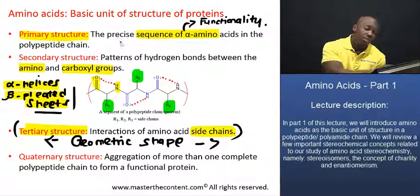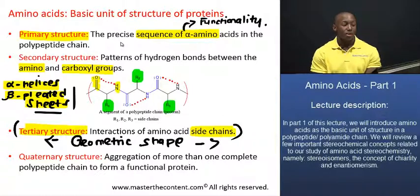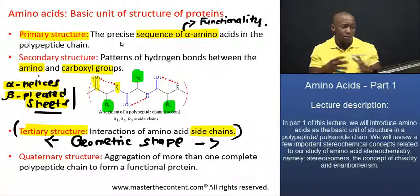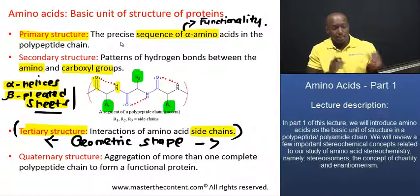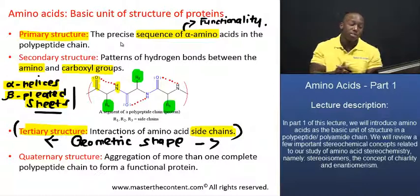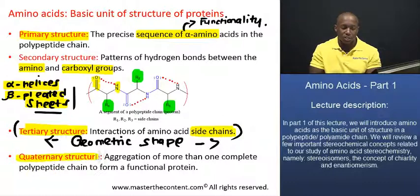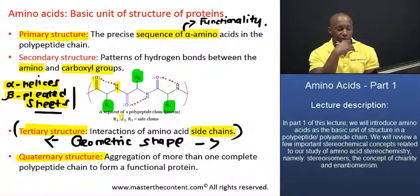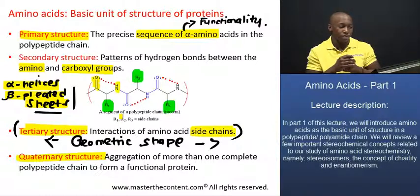As far as the quaternary level of structure is concerned, that basically results when you have more than one protein coming together — aggregating and conforming — to form another complete functional protein. What I want to mention is that at any one of these levels of structural organization, you might have a completely functional protein. Not every single protein has to achieve the quaternary level of organization to be functional. You can have functional proteins at these different levels of organization. This was just to point out the hierarchy as far as the levels of organization are concerned.